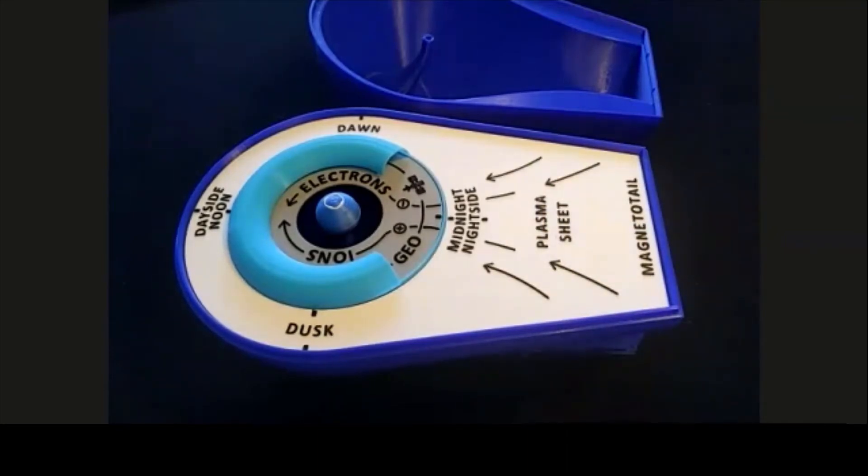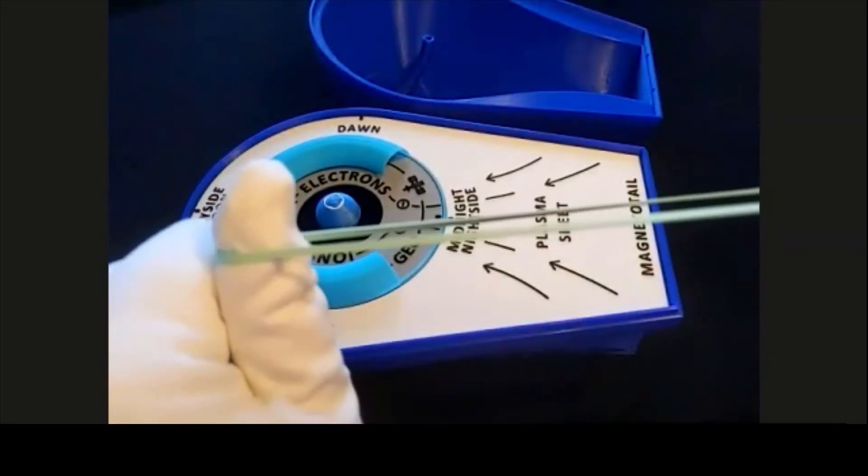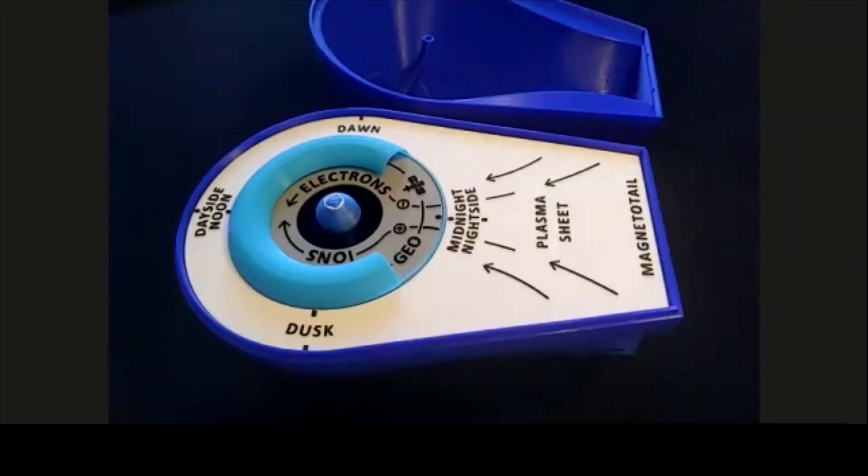With so much energy, the magnetotail gets stretched, just like a rubber band, until part of it breaks off and the rest snaps back toward Earth. That makes some particles accelerate along the magnetic field and rain down into the atmosphere, causing and enhancing the beautiful northern and southern lights.